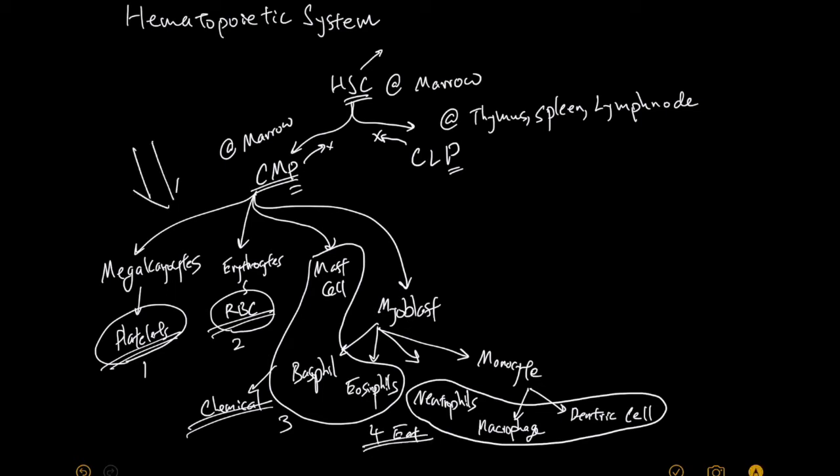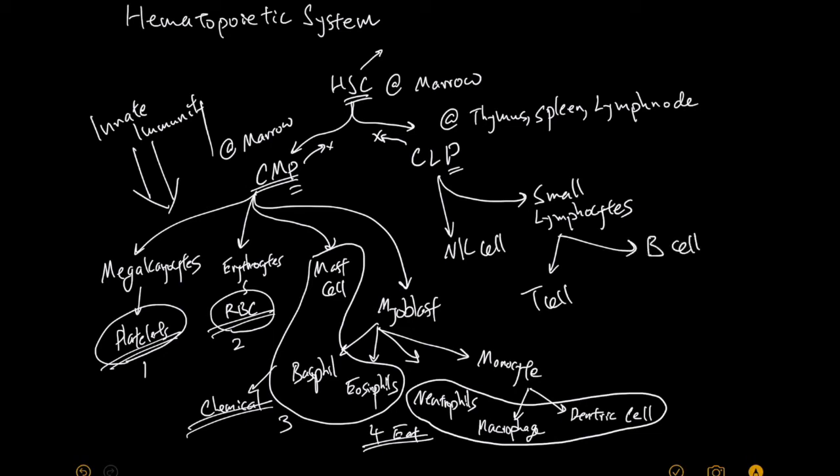Most of these common myeloid progenitor cells have a lot to do with the innate immunity. Now let's go to the common lymphoid progenitors. They can become natural killer cell or small lymphocytes, which can become T cells or B cells. And activated B cells are plasma cells. When people talk about white blood cells, they mean these cells. And the common lymphoid progenitor cells have a lot to do with the adaptive immunity.